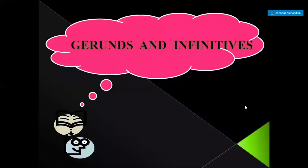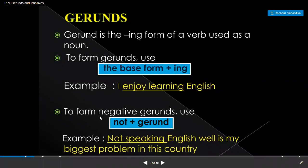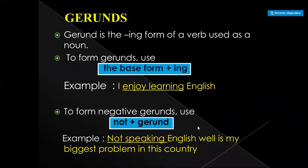Hi guys, today we have a new grammar topic. The topic for today is gerunds and infinitives. A gerund is the -ing form of a verb used as a noun. To form gerunds, use the base form of the verb plus -ing. For example: I enjoy learning English. To form the negative gerund, use 'not' plus the gerund. Remember, 'not' gives it the negative meaning.